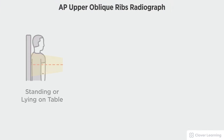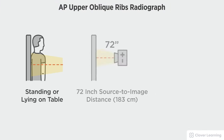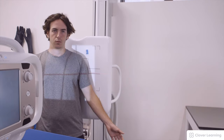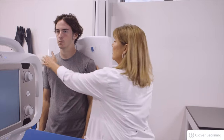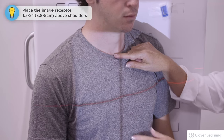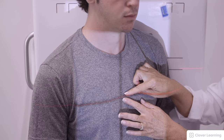In this view we will be demonstrating the AP upper oblique ribs. The AP upper oblique ribs should be performed with the patient standing at the upright bucky or lying on a table with a 72-inch source to image distance and no tube angulation. For the oblique views we again perform above and below the diaphragm. Since the injury is posterior and on the left, we roll the patient to the affected side into LPO at 45 degrees.